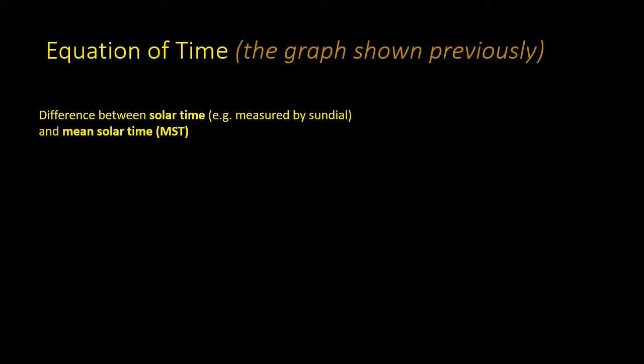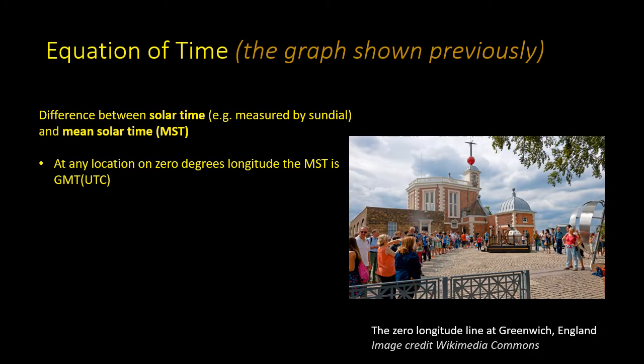In this video I'm going to talk about the equation of time — that's the difference between the solar time measured by a sundial and the mean solar time. At any location on the zero longitude line the mean solar time is similarly Greenwich Mean Time, GMT.